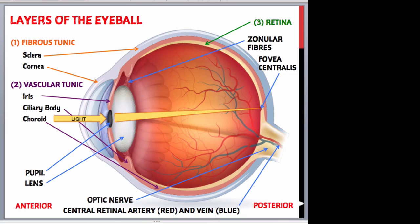It is still possible to see with one eye; however, three-dimensional vision is impaired, particularly in relation to the judging of distances. There are three layers of tissue in the walls of the eye. The first layer is the outer fibrous layer, also known as the fibrous tunic, which is made up of the sclera — which is this structure here — and the cornea, which is this structure here.